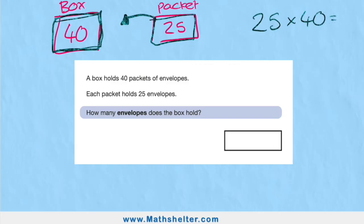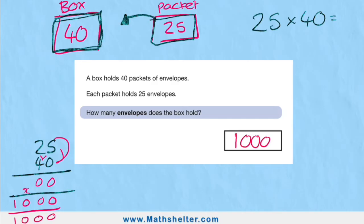What method could I use to solve this? I could use grid method or column method. I'm going to use column method. Here we go. 25 multiplied by 40. I've got 0 times 5 is 0. 0 times 2 is 0. And then my next row is 4 times 5. But it's not a 4. It's a 40. So I can show that by putting my 0. 4 times 5 is 20. 4 times 2 is 8. Plus my 2 is 10. So I have 1,000. Add to nothing. So my answer should be 1,000. There we go. Simple. All I had to understand is that if a box holds 40 packets and in each packet there's 25 envelopes, I have to multiply them together to get my total amount of envelopes.